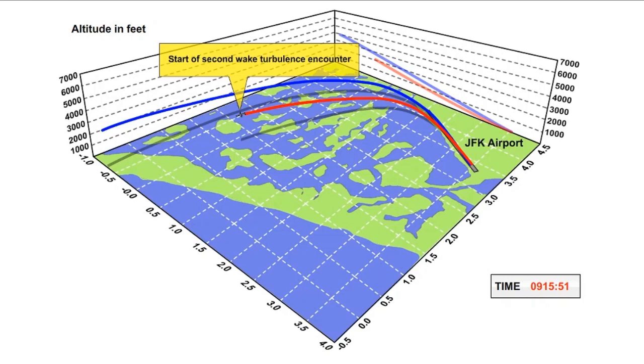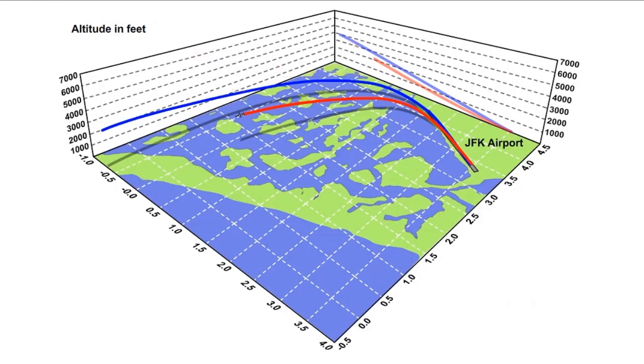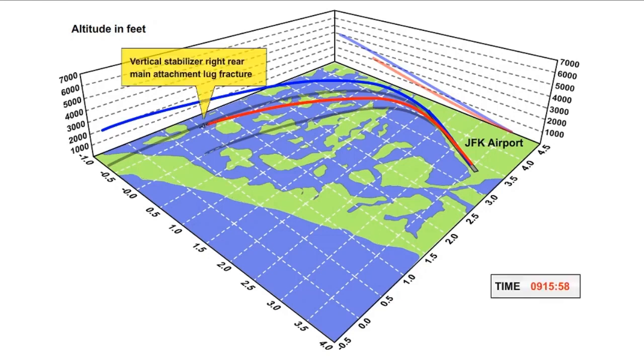These alternating control inputs resulted in a rapidly increasing side slip and an increase in load on the vertical stabilizer. Within seven seconds of the first control input, load on the vertical stabilizer increased to levels in excess of the design ultimate load, and the vertical stabilizer failed and departed the airplane.